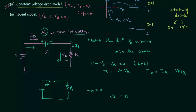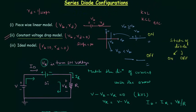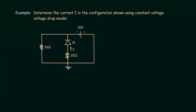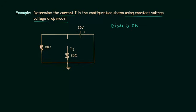Now I will solve one numerical problem to make things more concrete. We need to calculate current I using the constant voltage drop model. There is one voltage source and two resistances in this circuit. The direction of current I matches the direction of the arrow in the diode symbol, so the diode is on. We replace the diode with its equivalent model — the barrier potential. For a silicon diode, the barrier potential equals 0.7 V.